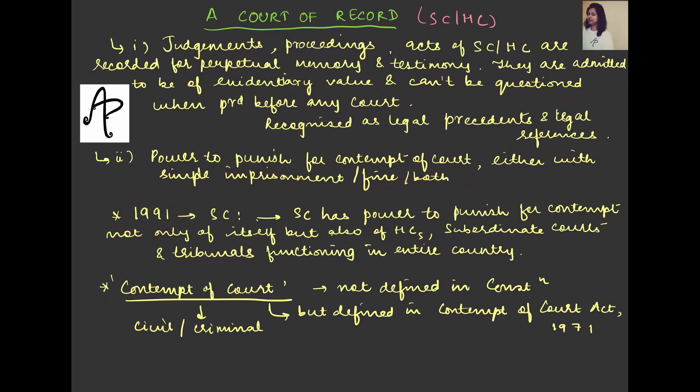There is a provision from 1991 where the Supreme Court has the power to punish for the contempt not only of itself. If there is contempt from your side, whether it is Supreme Court, High Court, Tribunal or Subordinate Courts, in either cases, the Supreme Court has the power to punish for that contempt. Now, what is this contempt of court? This term is not defined in the Constitution.